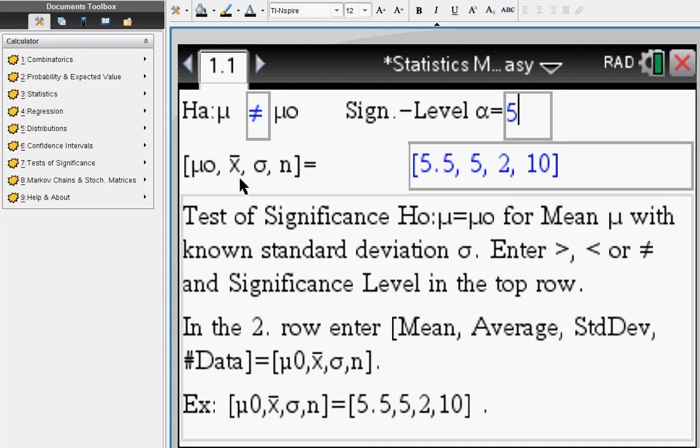Let's say we're going to use a significance level of 5 percent, and here in this box we're going to enter our data that we need to perform the test. 5.5 for the mean, and here n is 10.